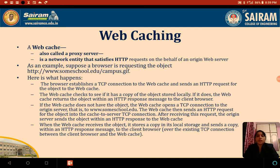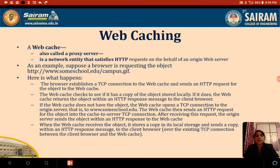When the web cache receives the object, it stores a copy in its local storage and sends a copy within an HTTP response to the client browser. This is how the web cache works. The web cache stores a copy in its own local storage so that if after a few minutes or in the future anybody else in the network asks the same question — like 'how many states are there in India' — it will not forward the request to the web server. Instead, it will itself give the HTTP response to the client browser.